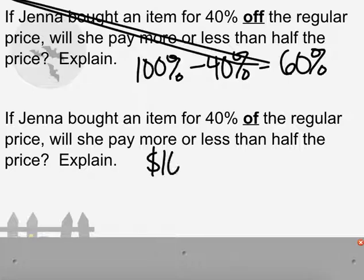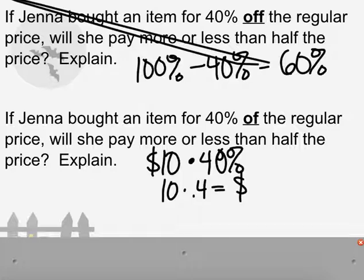If Jenna bought an item for 40% off the regular price, will she pay more or less than half the price? Explain. Well, 40% off means paying 60% of the original, and 60% is more than 50%, so yes, this is less than half the price.